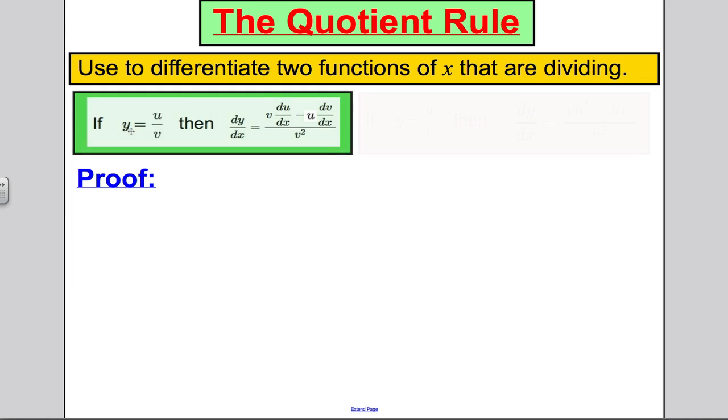And it says the following, if you have a function that can be written as one function divided by the other, a function u of x divided by a function v of x, then dy by dx is given by the formula v du by dx minus u dv by dx, all divided by v squared.